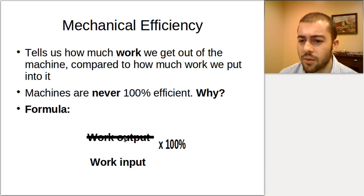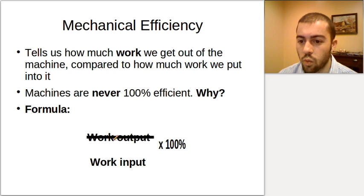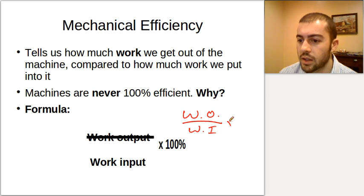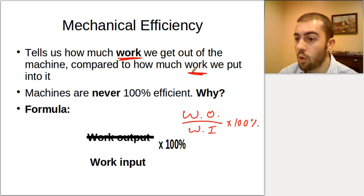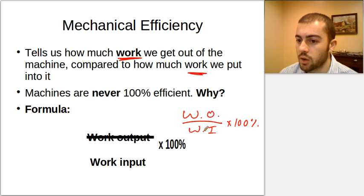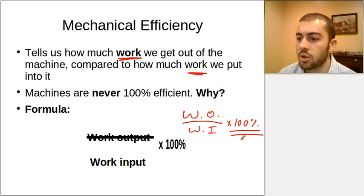Now for mechanical efficiency. The formula for mechanical efficiency is: work output divided by work input, times 100%. The key difference here is that we're comparing work, not force — how much work we get out of the machine compared to how much we put in. We multiply by 100% to express it as a percentage, so you might say a machine is 80% efficient, meaning you get 80% of the work you put in back out of the machine.